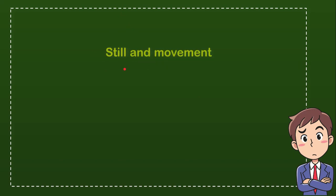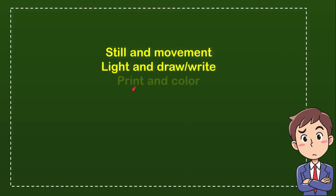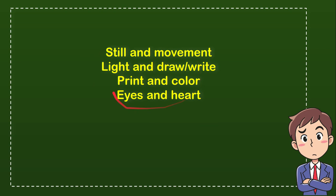The first option is still and movement. The second option is like and draw or write. The third option is print and color. And the last option is eyes and heart. So from these four options, which one do you think is the correct answer?